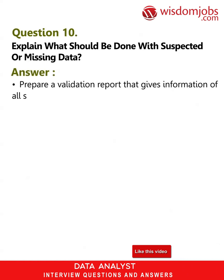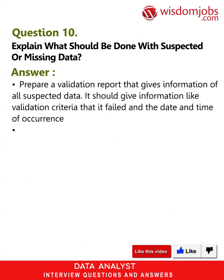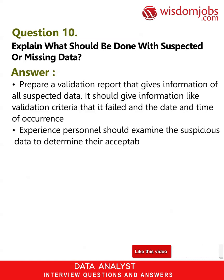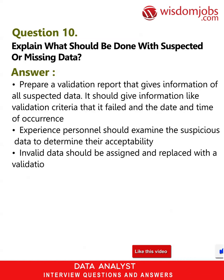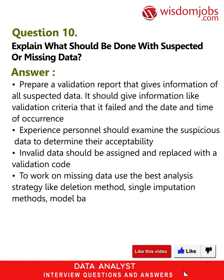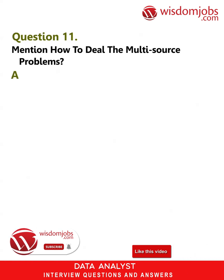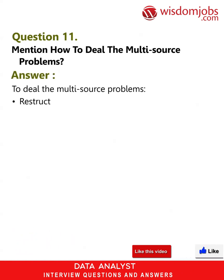Question ten: What should be done with suspected or missing data? Answer: Prepare a validation report that gives information on all suspected data, including validation criteria that failed and the date and time of occurrence. Experienced personnel should examine suspicious data to determine acceptability. Invalid data should be assigned and replaced with a validation code. To work on missing data, use the best analysis strategy such as deletion methods, single imputation methods, or model-based methods.